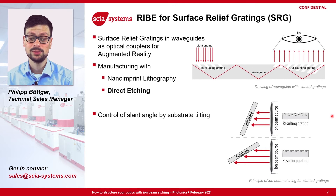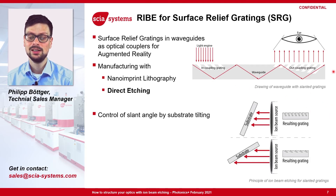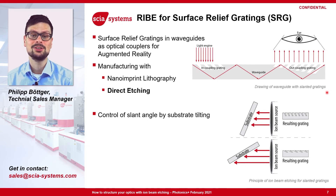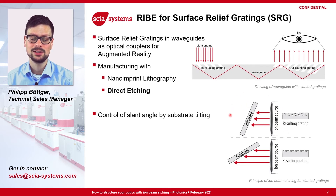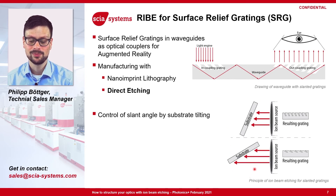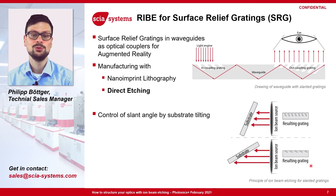A second application of ion beam etching is the production of surface relief gratings. Such gratings are used as in-couplers or out-couplers in optical waveguides for augmented reality devices. Ion beam etching offers several advantages for the fabrication of such surface relief gratings. One important point is that we have a separation between the plasma and the substrate, which means the substrate can be freely tilted within the ion beam. Therefore, by using a specific angle of incidence you end up with a specific angle for your grating.